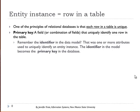So remember the identifier in the data model? That was one or more attributes that could uniquely identify an entity instance. Well, the identifier in the model becomes the primary key in the database.